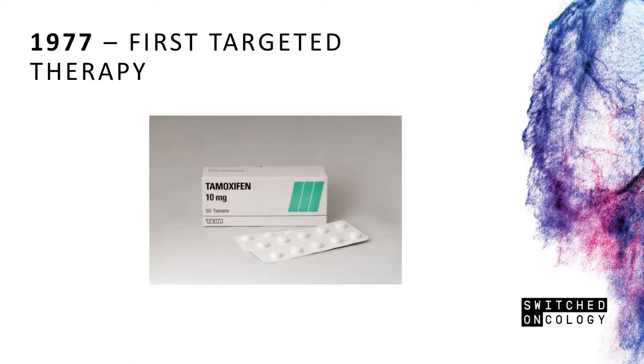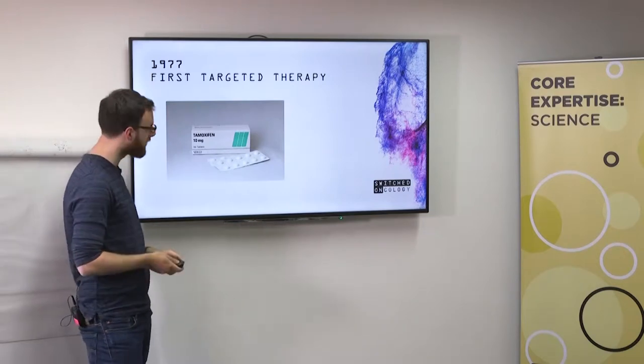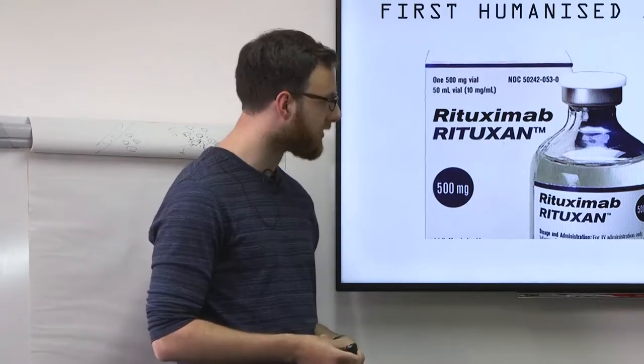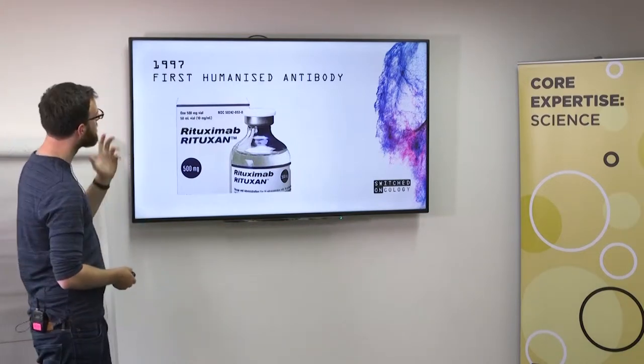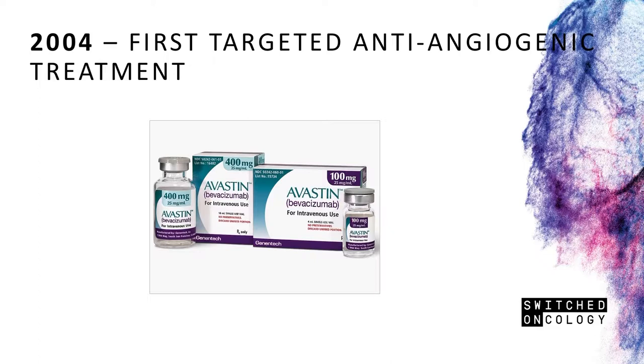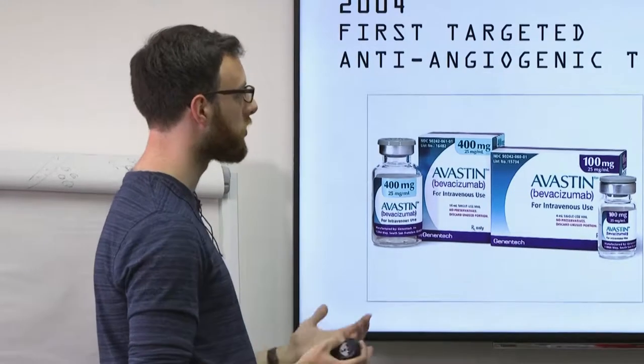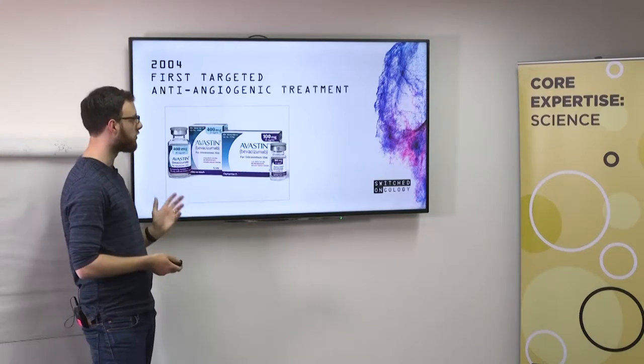1977, the first targeted therapy. We've got Tamoxifen targeting the estrogen receptor, originally for metastatic breast cancer. 1997, the first humanized antibody. Here we've got Rituxan, Rituximab, now used across blood cancers and hematological malignancies, even for rheumatoid arthritis. It's the first therapeutic application of a monoclonal antibody in cancer. Then 2004, we have Avastin, first licensed for colorectal cancer but also now used across all sorts of solid tumors, marketed by Roche. Massively valuable, high-selling drug in oncology.